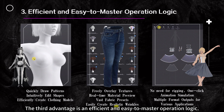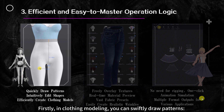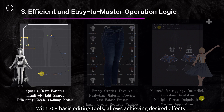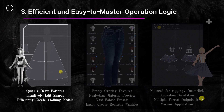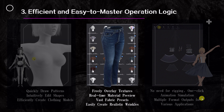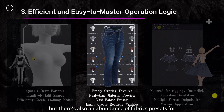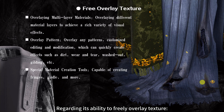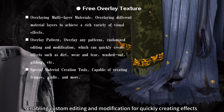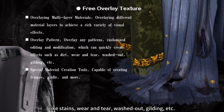The third advantage is an efficient and easy-to-master operation logic. In clothing modeling, you can swiftly draw patterns — drawing closed shapes on the model automatically generates tailored clothing patterns. With 30-plus basic editing tools, the 3D viewport provides real-time previews, allowing intuitive editing and showcasing of clothing styles. Regarding output effects, you can freely overlay textures with real-time previewing of material effects. There's an abundance of fabric presets for easily creating realistic folds, and you can overlay different material layers to enhance realistic fabric effects, enabling custom editing for effects like stains, wear and tear, washed out, gilding, etc.